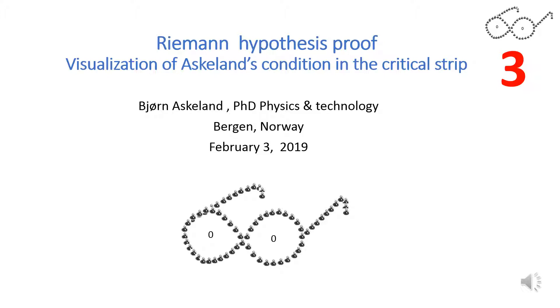Askeland's condition must be 0 for all zeta 0s. Showing that Askeland's condition can be 0 only on the critical line proves Riemann's hypothesis.